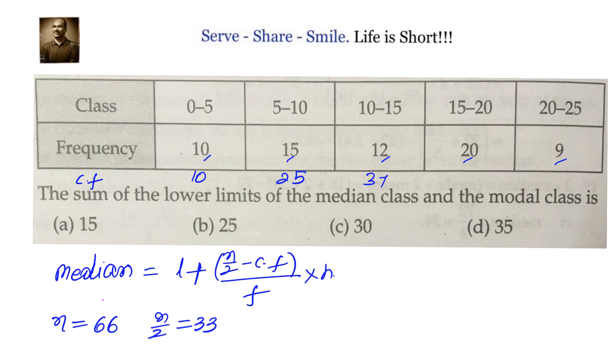25, 25 plus 12 equals 37, 37 plus 20 equals 57, and 66. n/2 minus cf, so n/2 should be greater than cf, and cf should